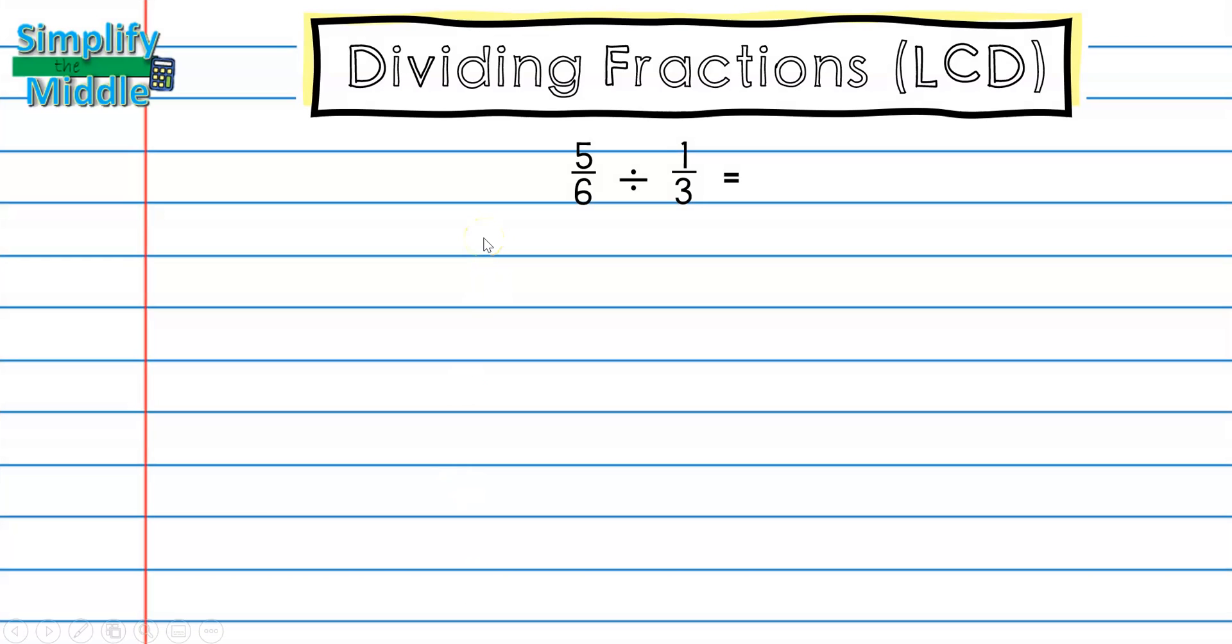In a previous lesson we learned that the first part of a division problem is our dividend, which is what I have or what I start with. The second part of a division problem is our divisor. This represents how many groups of. So for this particular problem I'm asking how many groups of one-third are in five-sixths.